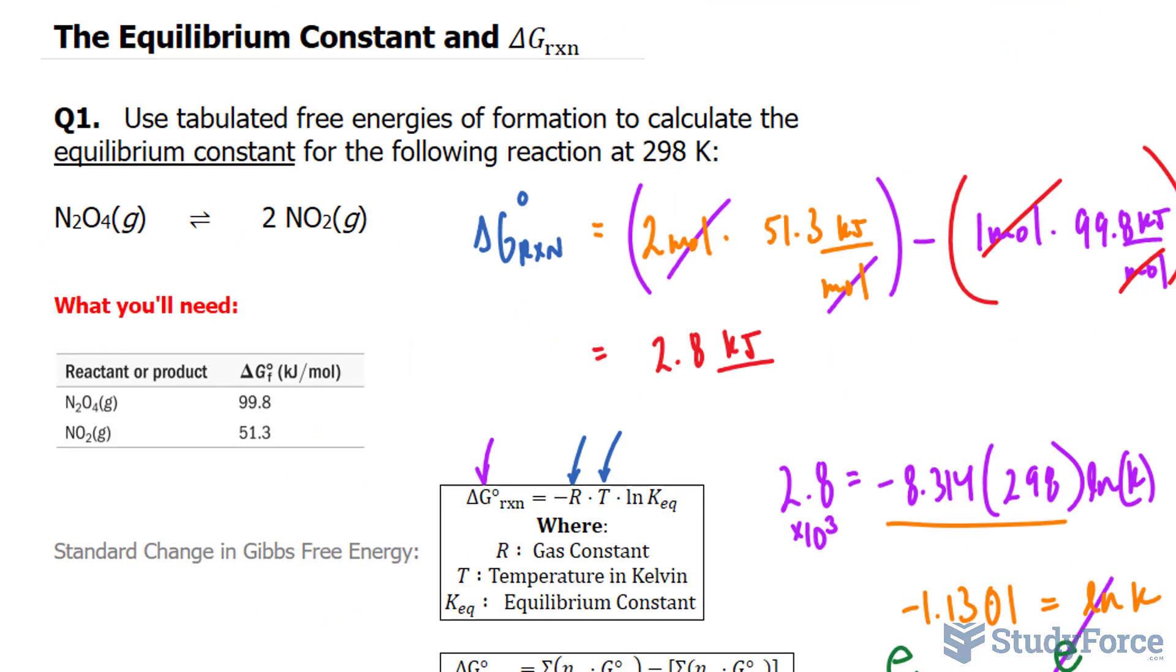And there you have it. Two examples discussing the relationship between the equilibrium constant and Gibbs free energy for the reaction.